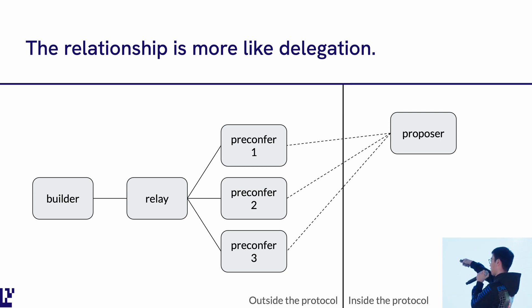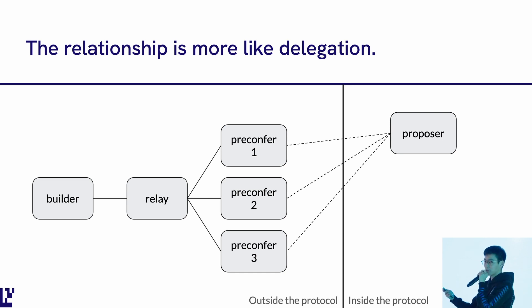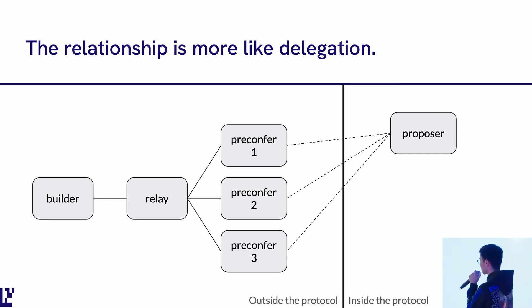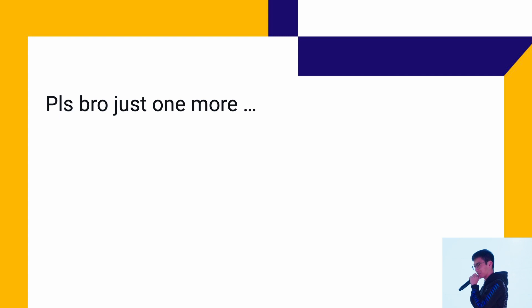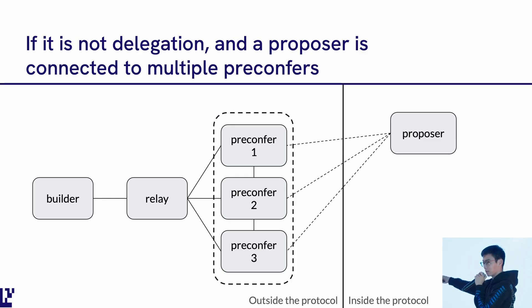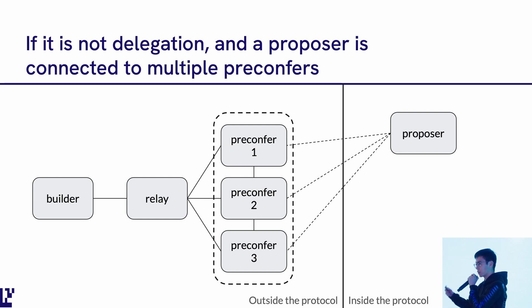For example, in this diagram you have one builder, one relay, three pre-confers, and one proposer. The proposer should only talk to one pre-confer, because if you talk to multiple, from the user perspective, you don't know who is offering the pre-conf service at what point, or whether those pre-conf services are in conflict with each other — creating a lot of inefficiencies. In the builder world, you can connect to multiple relays and run your own auction. But in the pre-conf world, you have to choose one party and give that party its responsibility. It's very much a delegation kind of role.